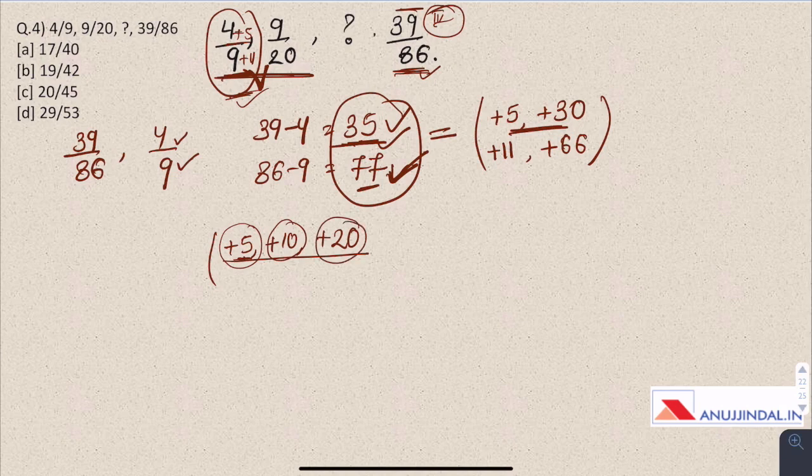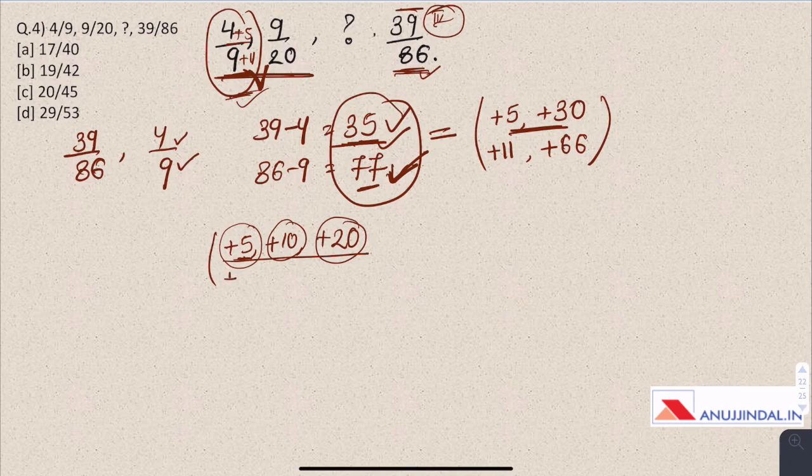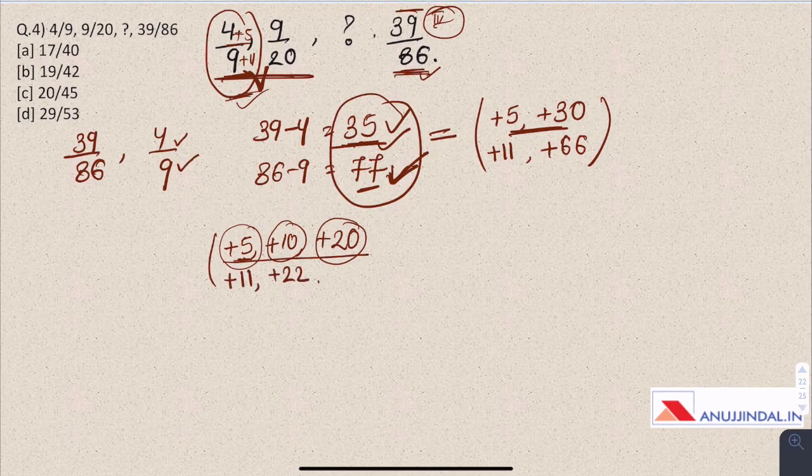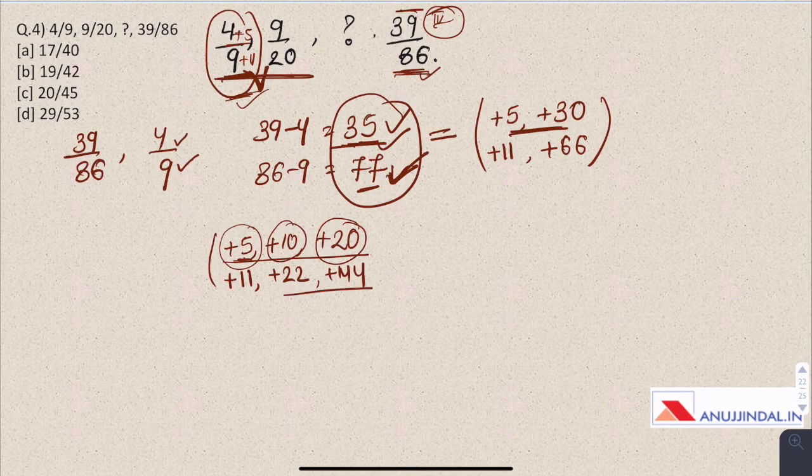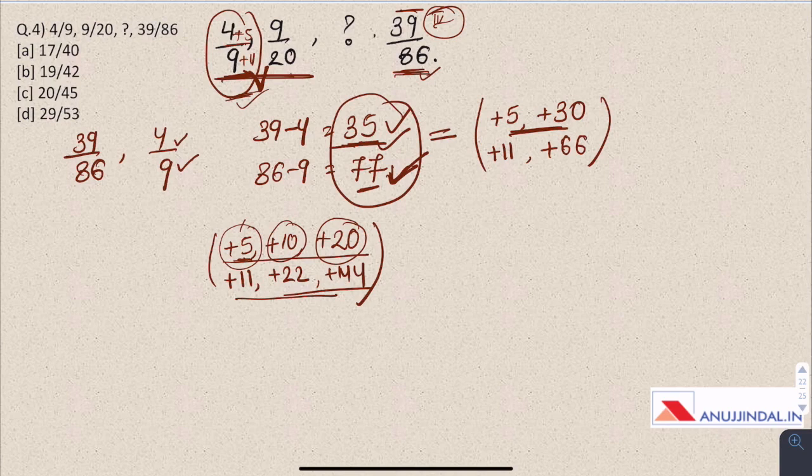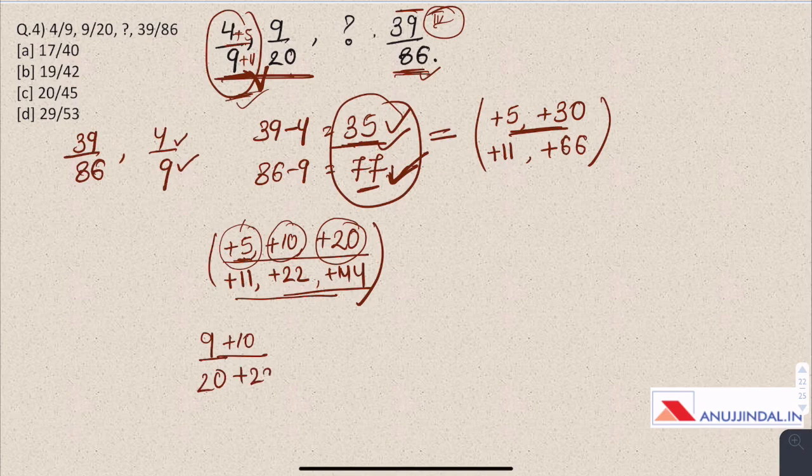Like the term by which the denominator is increased is multiplied by 2 every time with every increasing number in the series. And similarly we could write it plus 11, plus 22, and plus 44 which makes it 77 completely. So now we know the second term is 4 plus 5 by 9 plus 11, which is 9 by 20, and then to get the third term, 9 plus 10, 20 plus 22, which is 19 by 42.